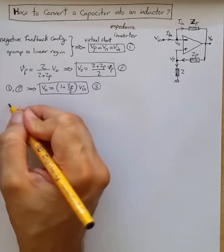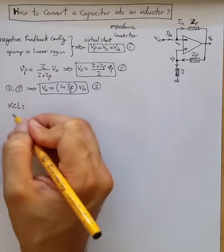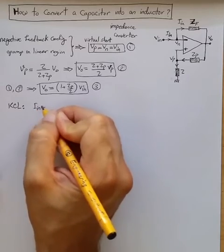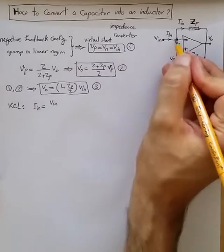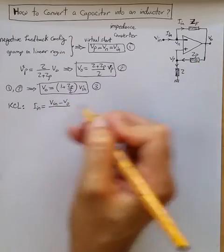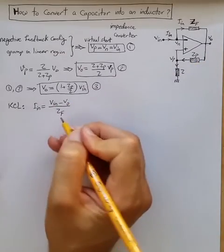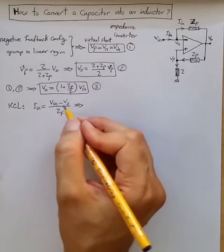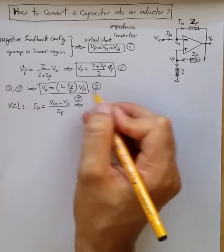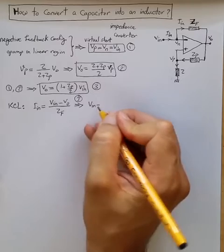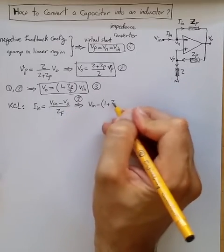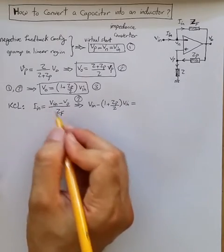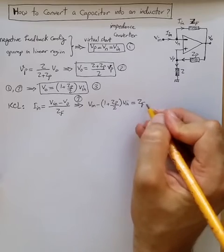So from KCL or KVL we can say IN is equal to VN minus Vout, the voltage across ZF divided by ZF. Now I can just replace Vout with the result from 3. So effectively VN minus, replacing Vout, one plus ZP divided by Z times VN equal to, multiply both sides with ZF, so ZF times IN.